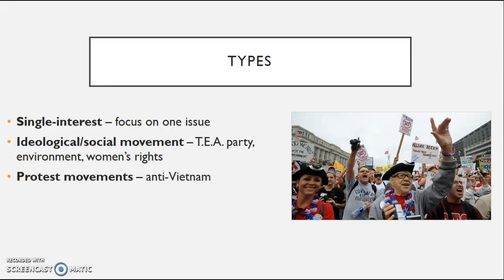Then you have ideological or social movements. The Tea Party, any environmental issue, or women's rights issue tends to be in that category. Then you have your protest movements, such as the anti-Vietnam, which is a good example. The Tea Party is a good example of an ideological type of interest group, as they were focused significantly on taxation as their number one issue, though some do classify them as a third party.